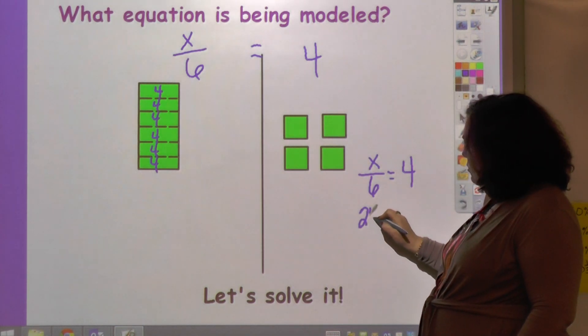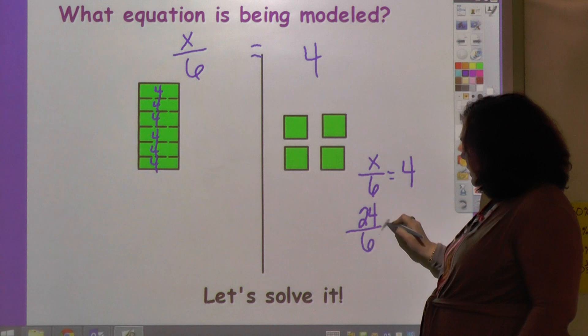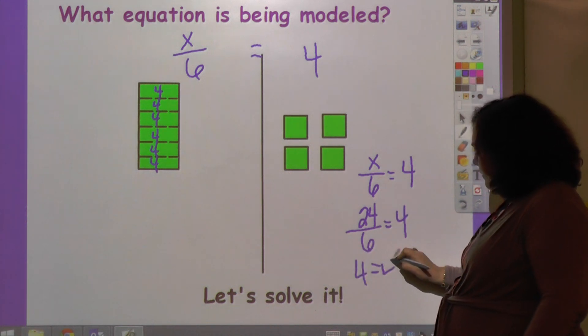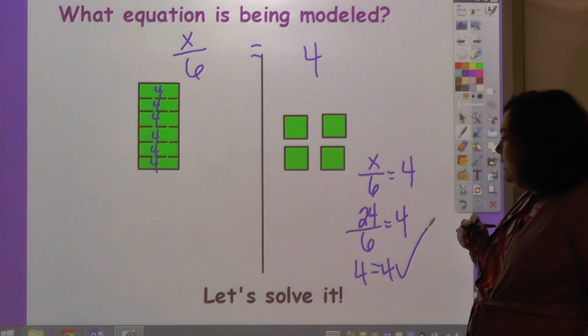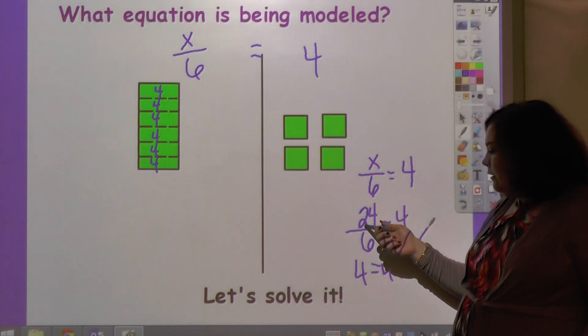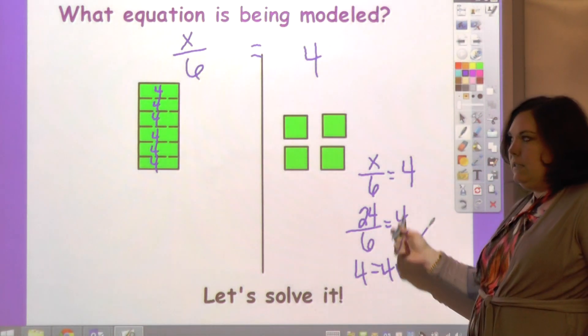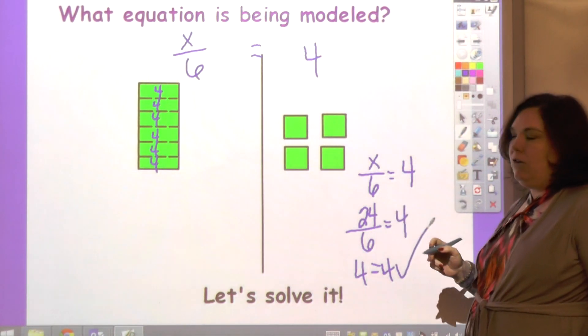So I put it back in. 24 divided by 6 equals 4. Yes, 4 equals 4. I'm all set. Now, if you've got something weird here and it 4 didn't equal 4, you'd say I did something wrong and you'd go back in and try it again.